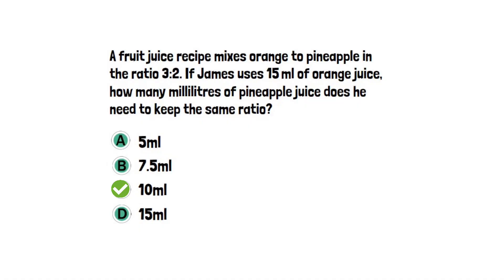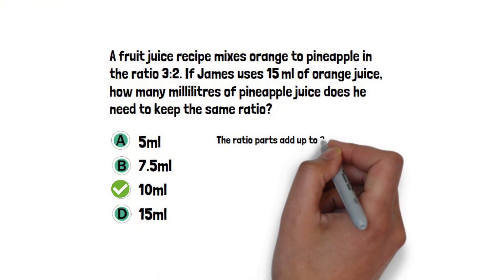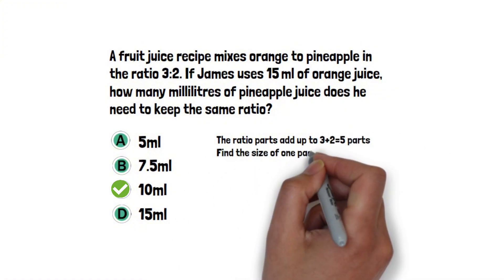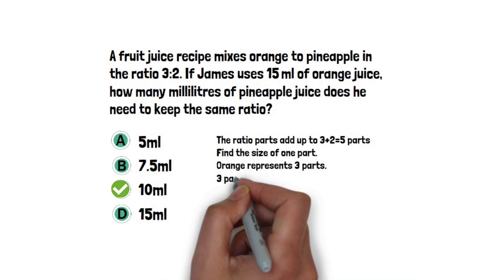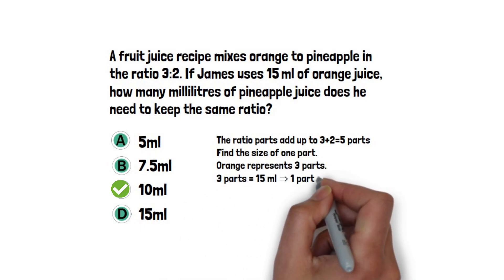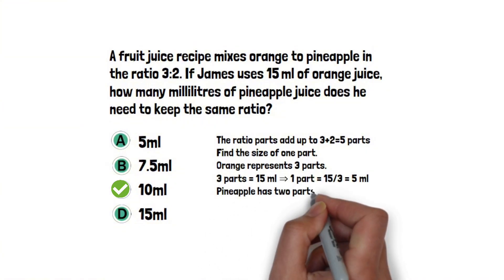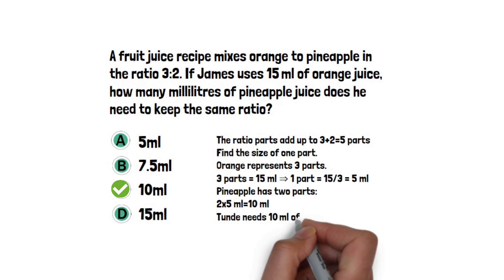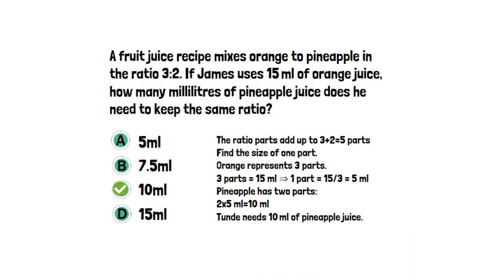Correct answer: C, 10 milliliters. Explanation: The ratio parts add up to 3 plus 2, which equals 5 parts. Find the size of one part — orange represents three parts, so three parts equals 15 milliliters, meaning one part equals 15 divided by 3, which equals 5 milliliters. Pineapple has two parts: 2 multiplied by 5 milliliters equals 10 milliliters. James needs 10 milliliters of pineapple juice.